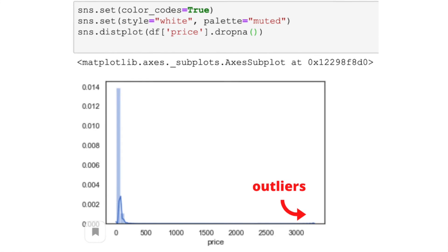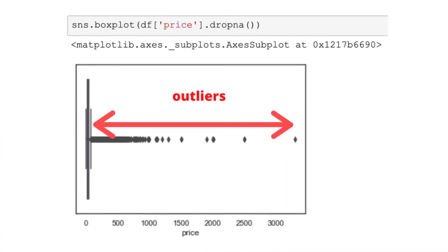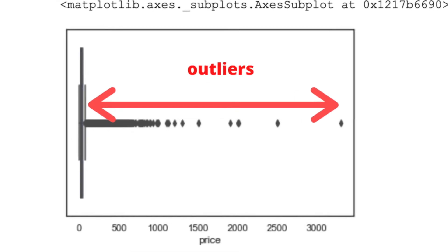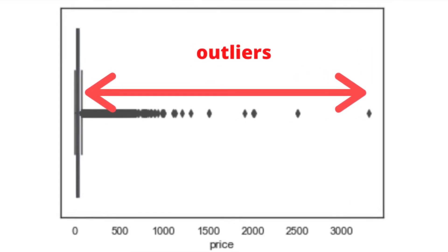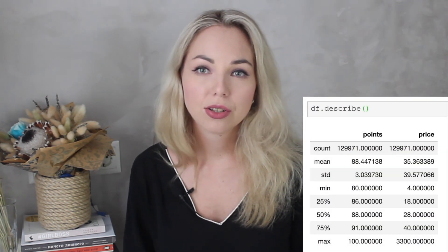To identify outliers, you can draw histograms and box plots. It's also useful to use the describe() function to get descriptive statistics about your parameters, including mean values, median, quartiles, standard deviation, and more.